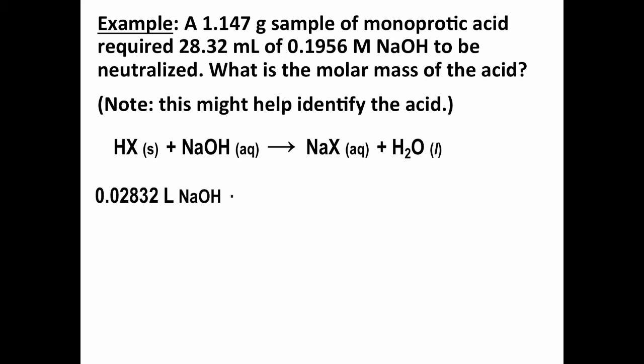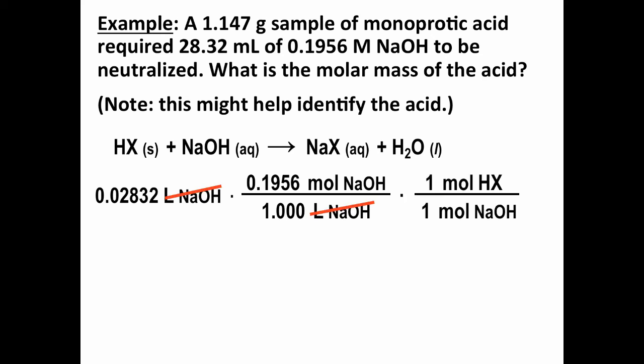Similar to what we did before, we take the volume of sodium hydroxide, convert to liters, so 0.02832 liters of sodium hydroxide. We convert from liters to moles for the sodium hydroxide using the molarity. And then this one is one-to-one stoichiometry. So one mole of NaOH reacts with one mole of HX, and that will then give us our moles of HX in this sample of our acid.